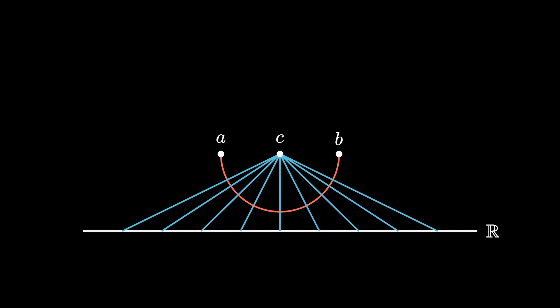Note that each line segment crosses the semicircle and the real number line at unique points, thus pairing each real number between A and B with every real number in a one-to-one correspondence. Every real number corresponds to a unique real number between A and B, and vice versa.